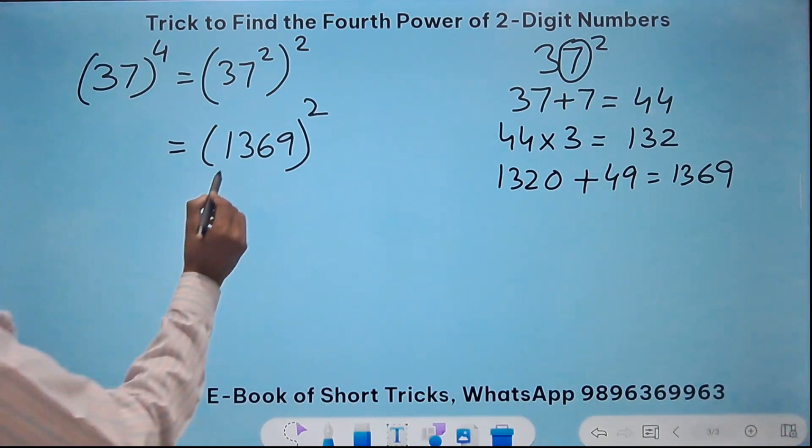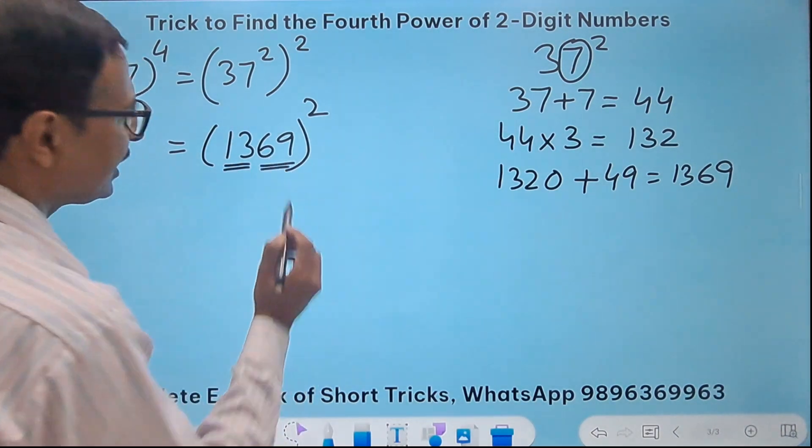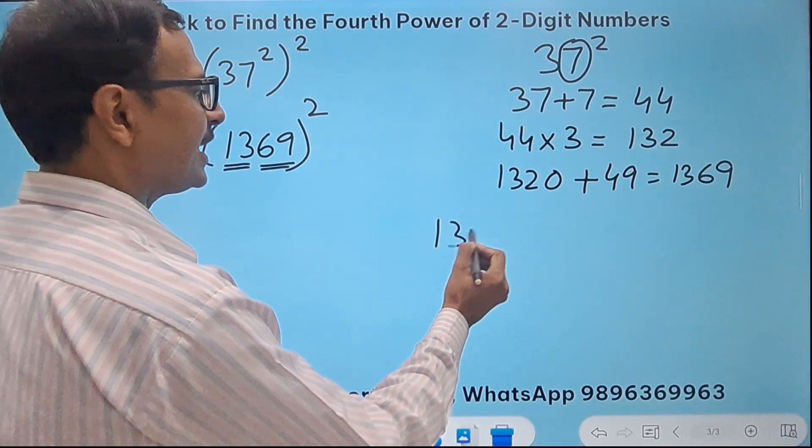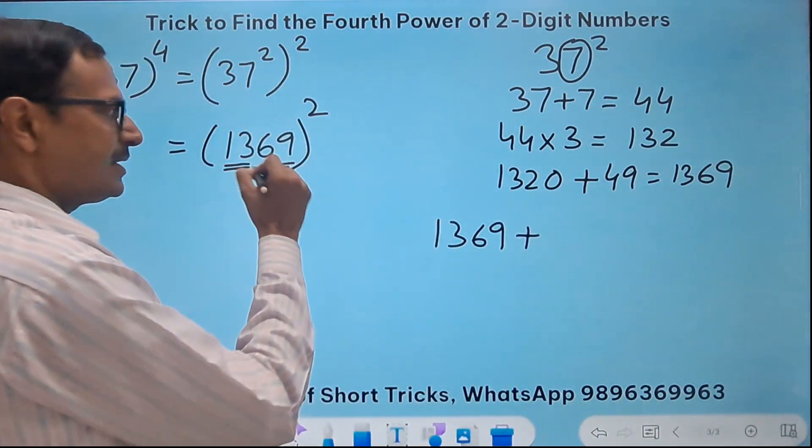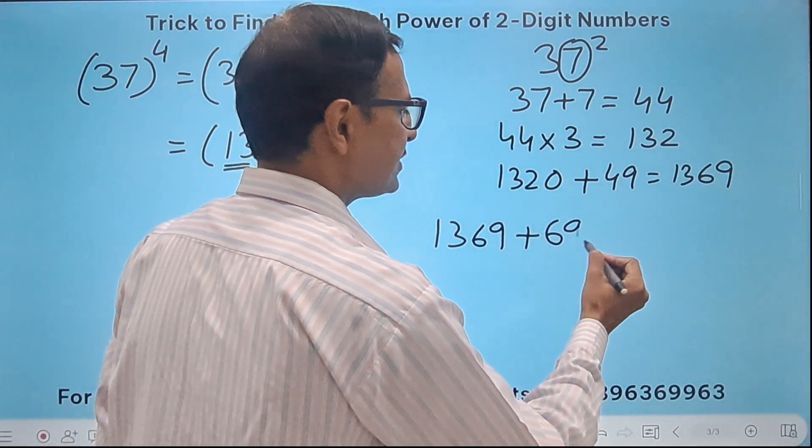I get 1369 here and then I have to square this number. Now a big challenge. So I have a 13 and a 69.